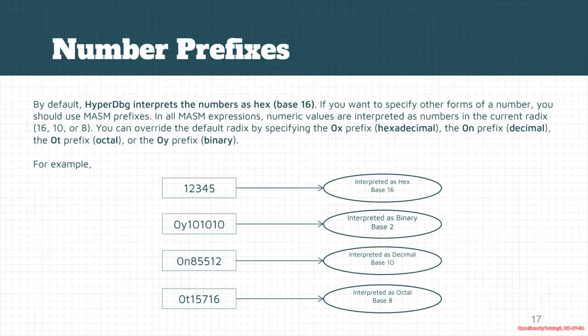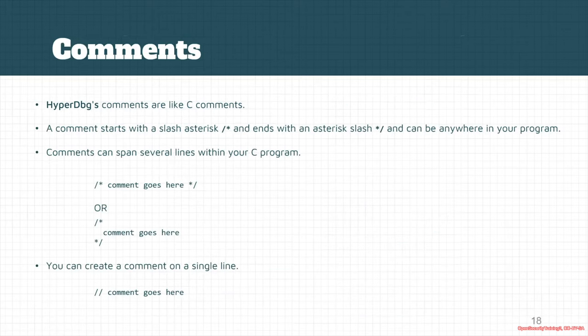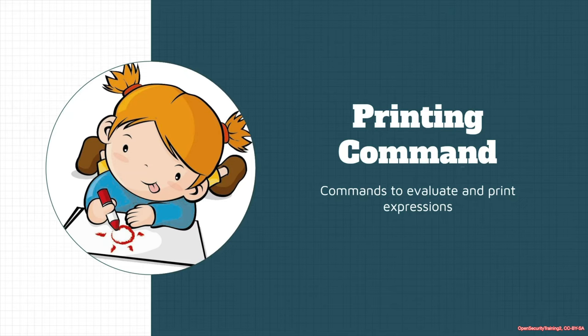If you don't put any prefix, values are interpreted as hexadecimal. Use '0x' for explicit hex, '0n' for decimal, '0t' for octal, and '0y' for binary. For example: '12345' is interpreted as hex; '0y10101 0' as binary; '0n8551 2' as decimal; '0t15716' as octal. Comments in the HyperDbg script engine use the same syntax as C — the standard comment signs.